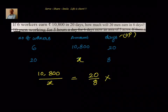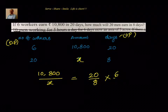Now I will keep the days as fixed and look at amount and number of workers. More number of workers will give more amount; less number of workers will give less amount. So this is also direct proportion. If it is inverse, we would reverse the ratio — instead of 6 by 20, we would write 20 by 6. Since it is direct, we have written a compound ratio, multiplying those two together.